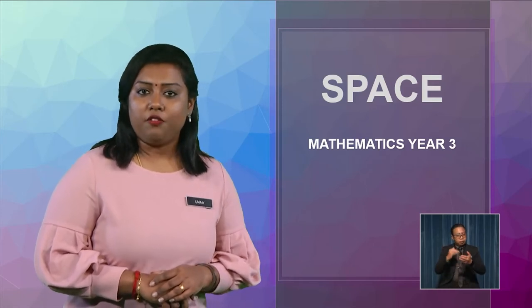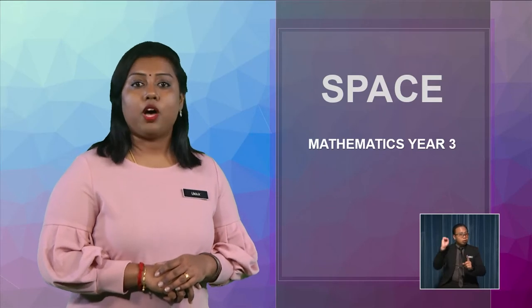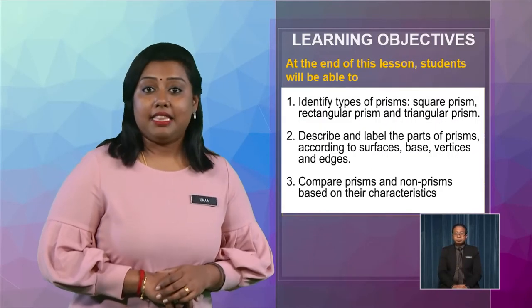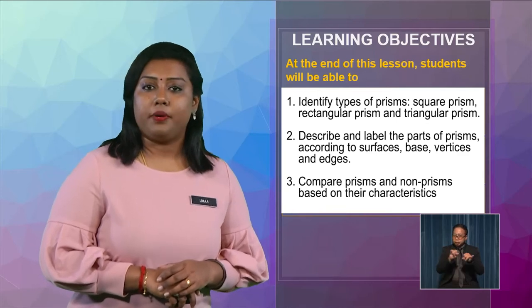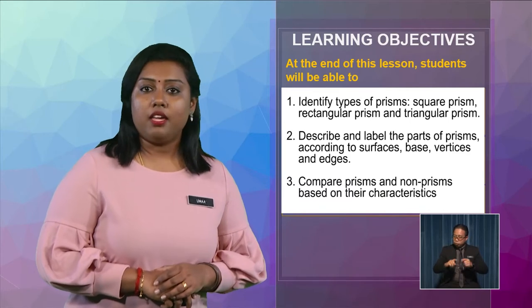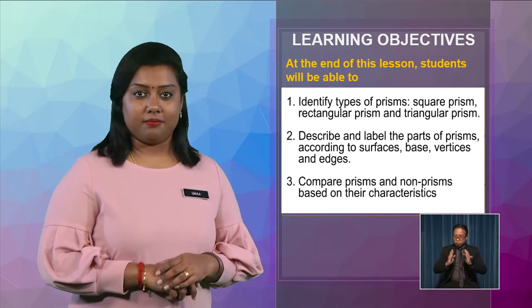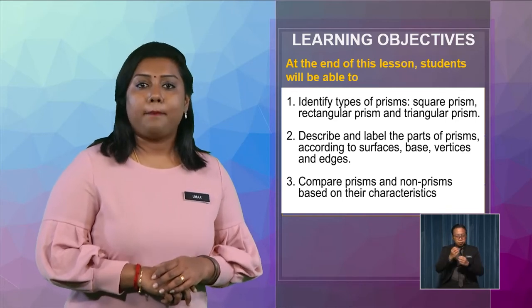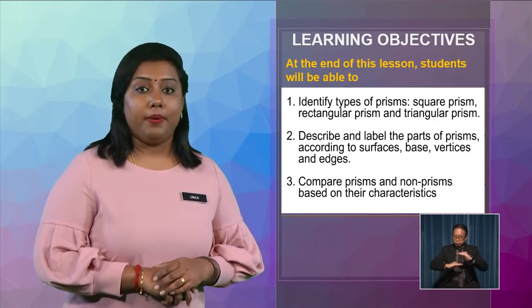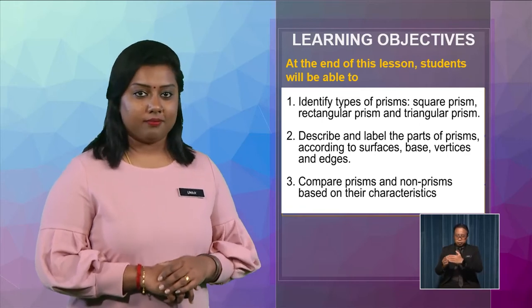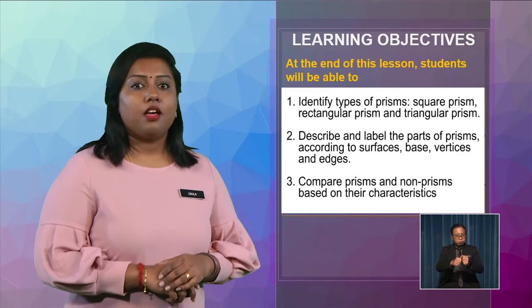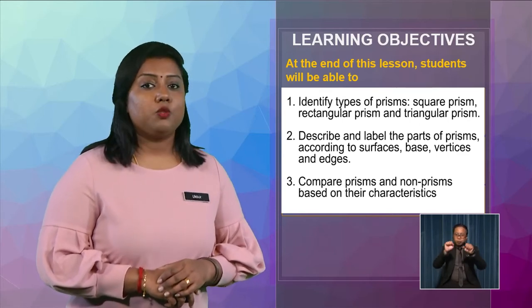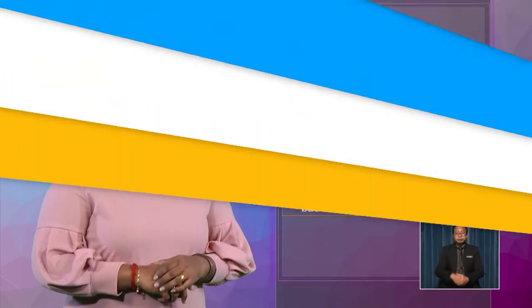Before that, it is good for us to go through the objectives of our lesson today. At the end of this lesson, you will be able to identify the types of prisms: square prisms, rectangular prisms, and triangular prisms. You will also describe and label the parts of the prisms according to their surfaces, base, vertices, and edges. And compare prisms and non-prisms based on their characteristics.